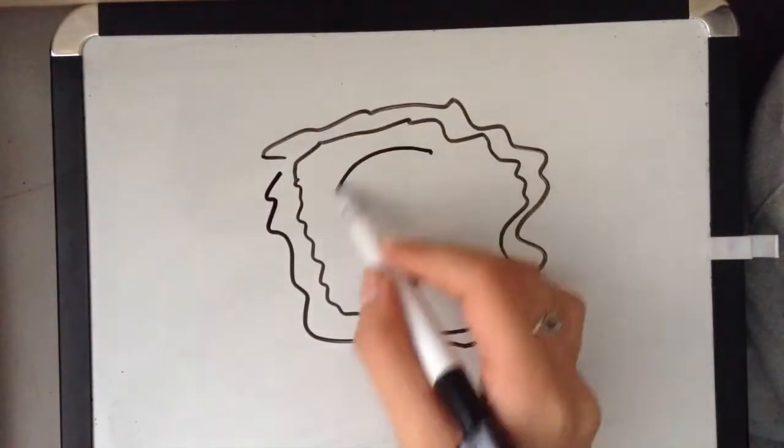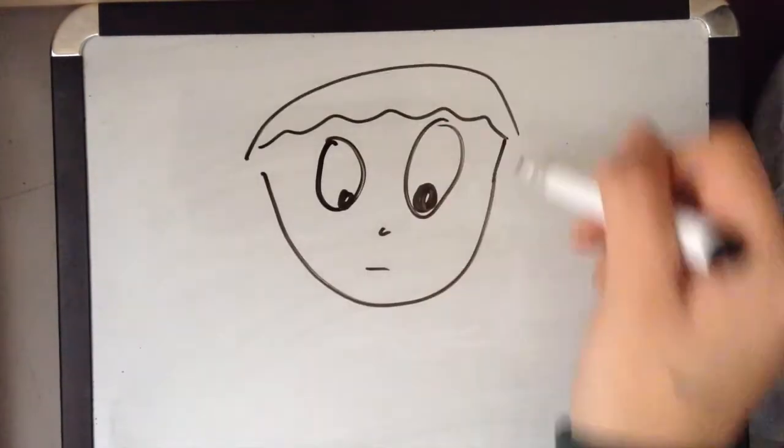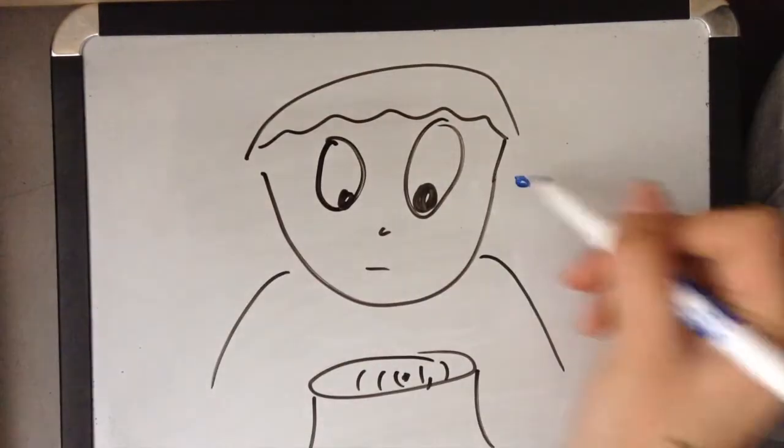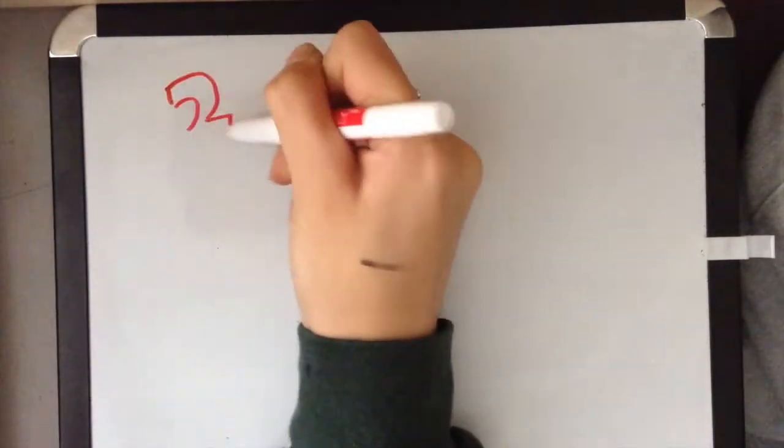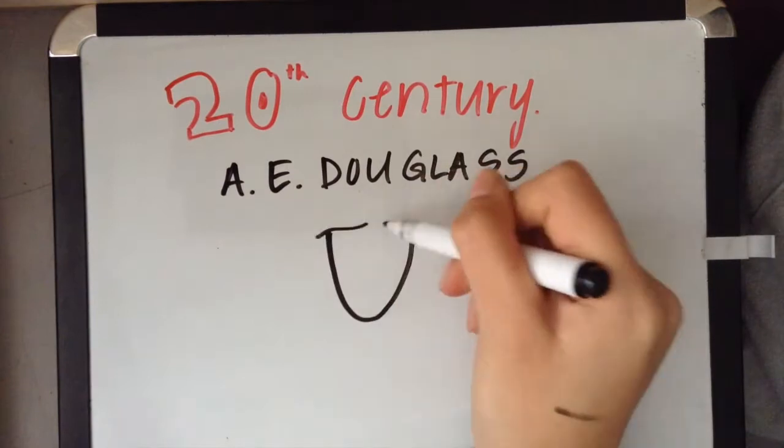Tree rings can give an accurate approximation of the age of trees. The more rings a tree has on its stump, the older it is. Dendrochronology wasn't introduced until the 20th century by a man named A.E. Douglas.